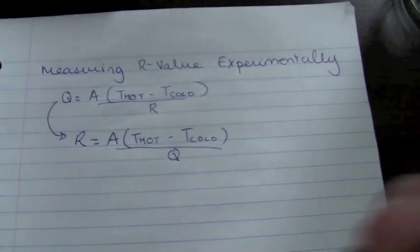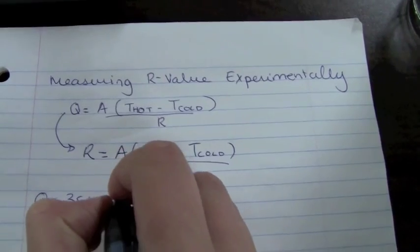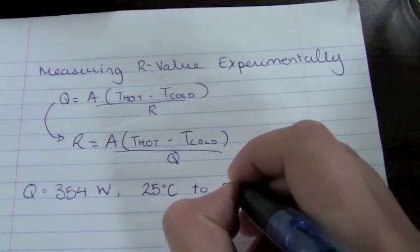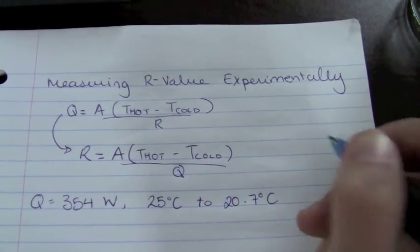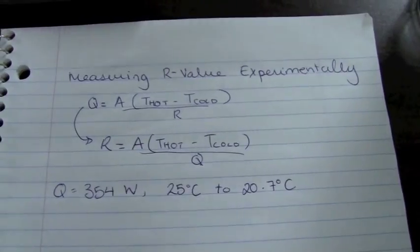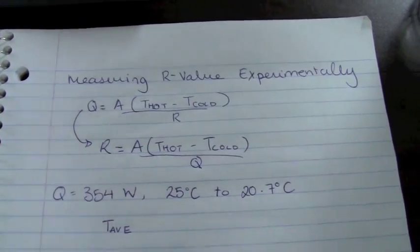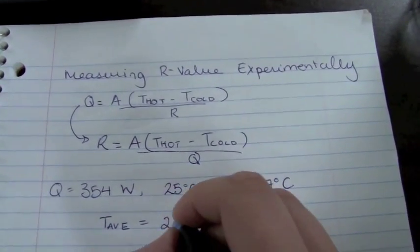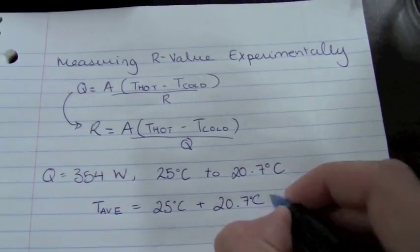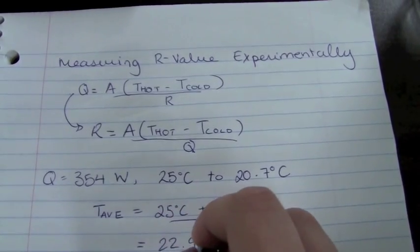If we go back to the example where we had a heat loss of 354 watts and that our temperature was going from 25 degrees Celsius to 20.7 degrees Celsius, it's possible for us to use this formula in order to find an average value for our R. The first thing we need to do is find an average temperature for the T-hot value. In order to do this, we simply add these two temperatures that we have, 25 and 20.7 degrees, and divide them by 2. This gives us an average temperature of 22.9 degrees Celsius.